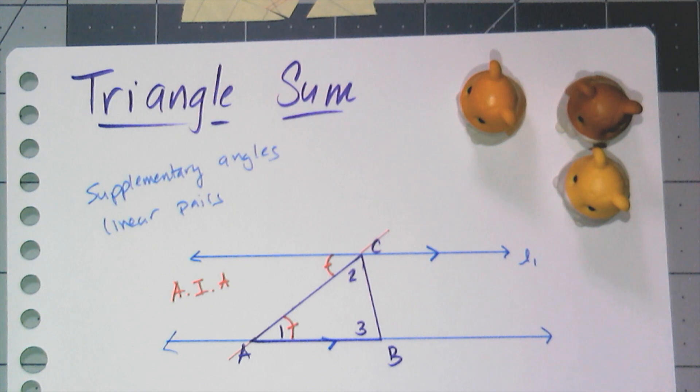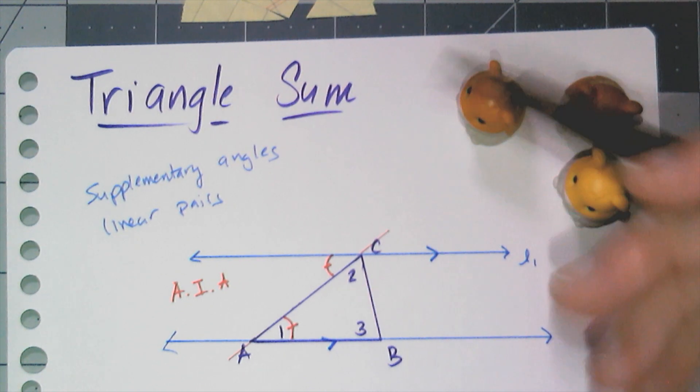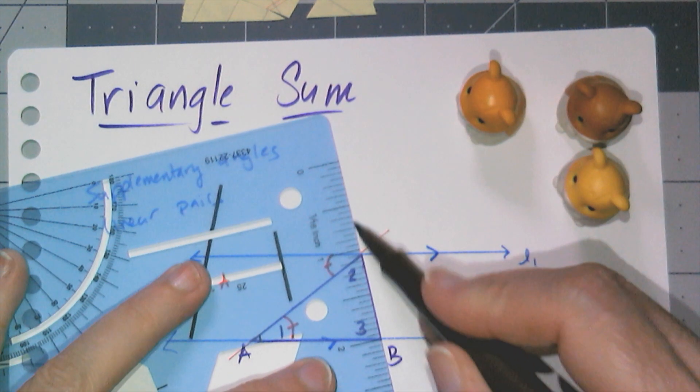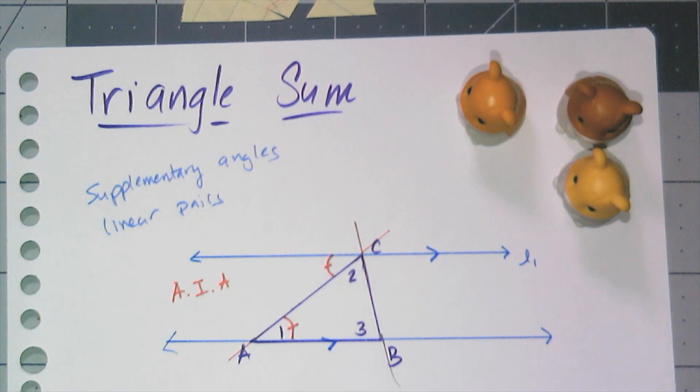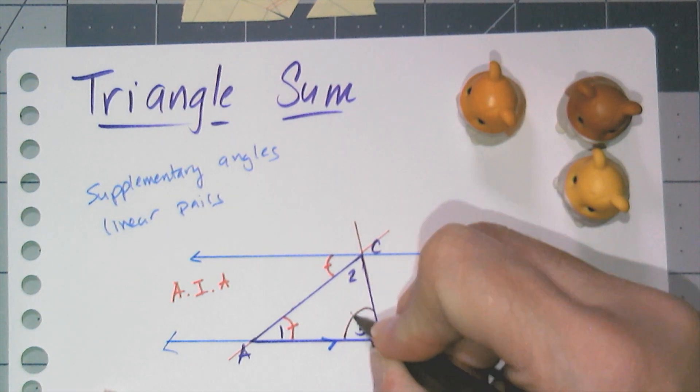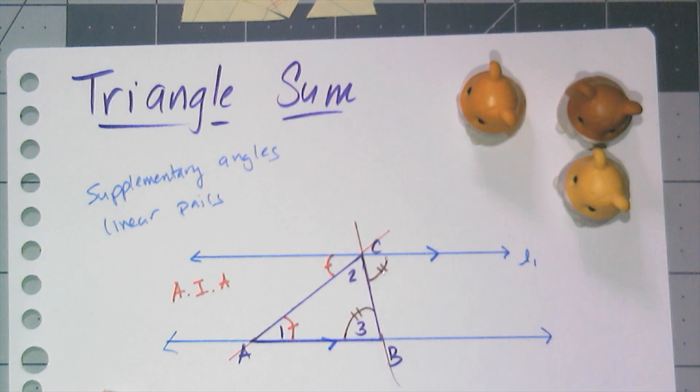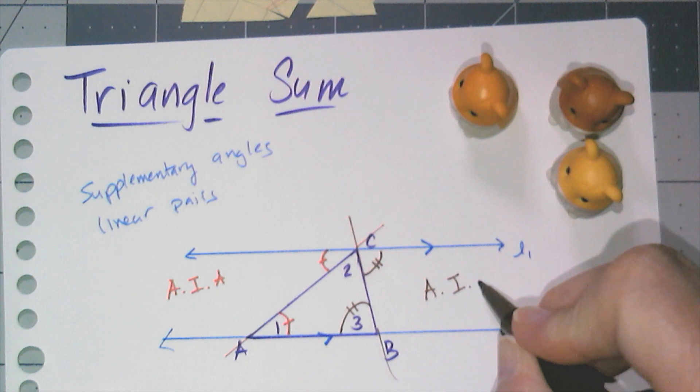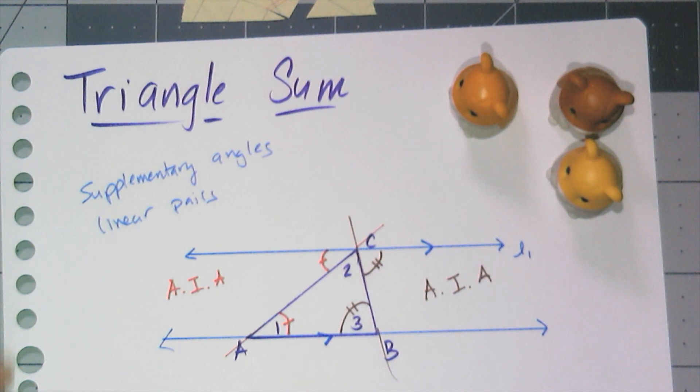Now if I think of the other side of the triangle CB as being another transversal that is cutting that parallel line, then I know by also alternate interior angles that angle three is congruent to this angle up there, also by alternate interior angles.